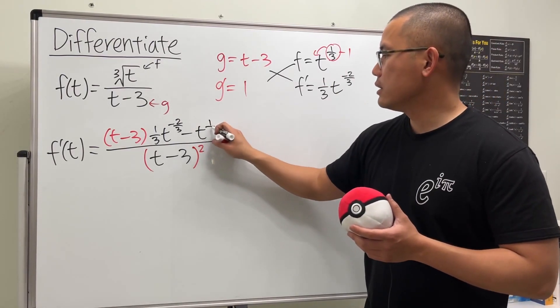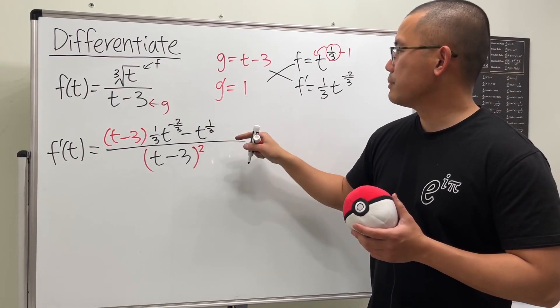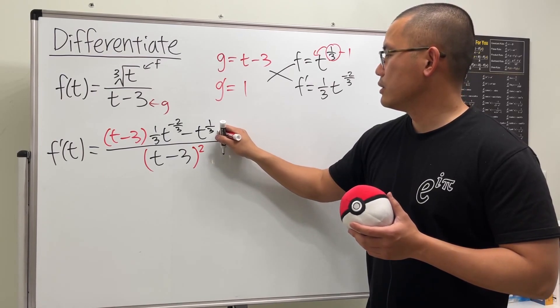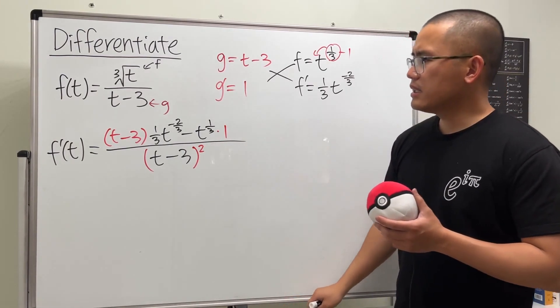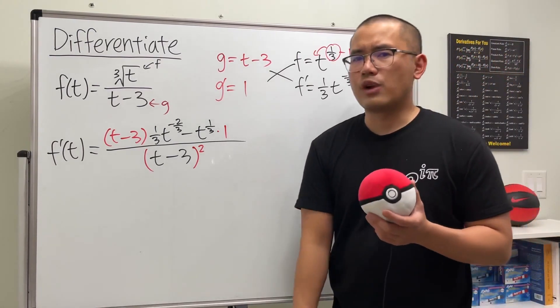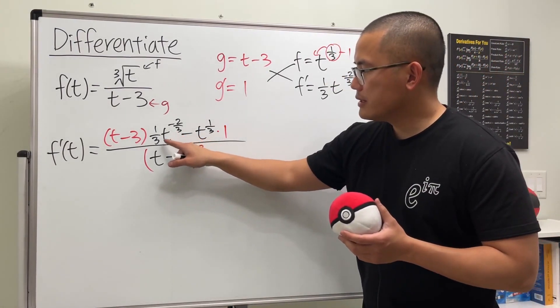And now you might be noticing that we actually have some complex fraction business. You can bring this down to the bottom, and it will look like this: one over three t to the positive two-thirds.